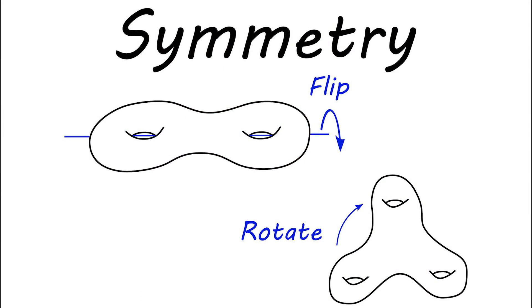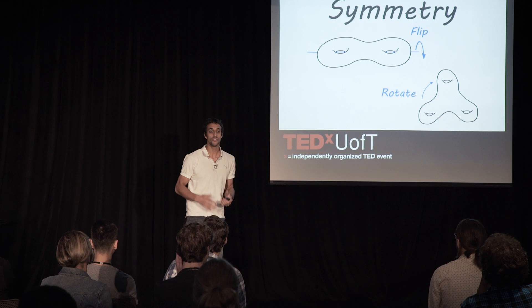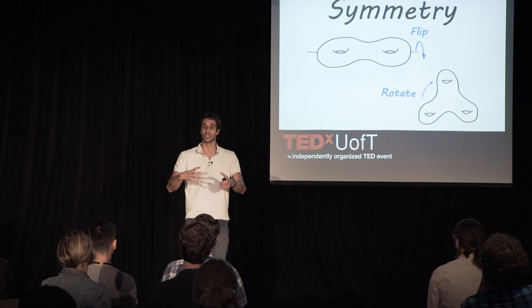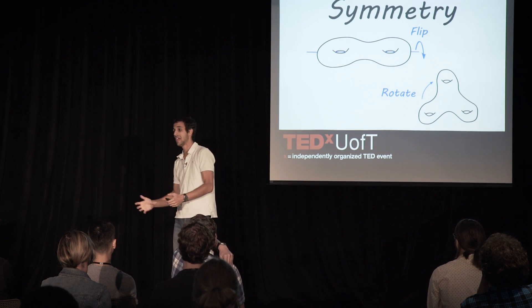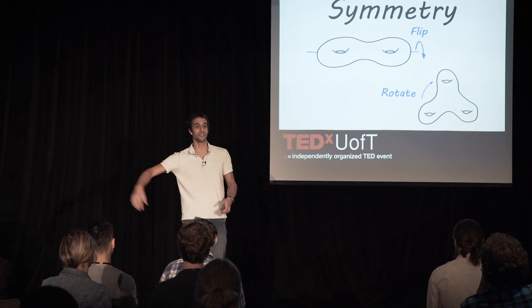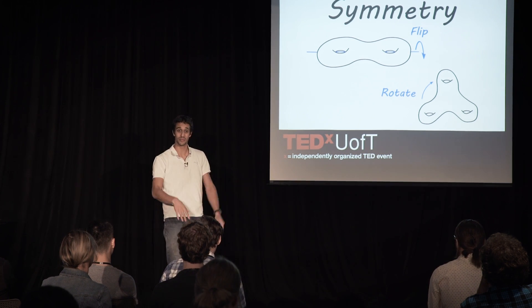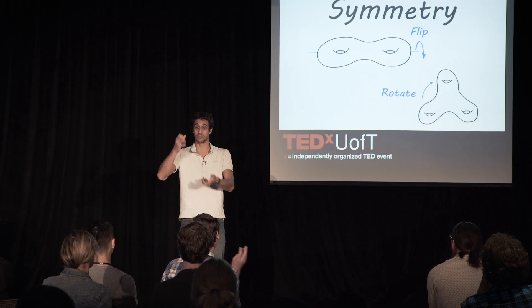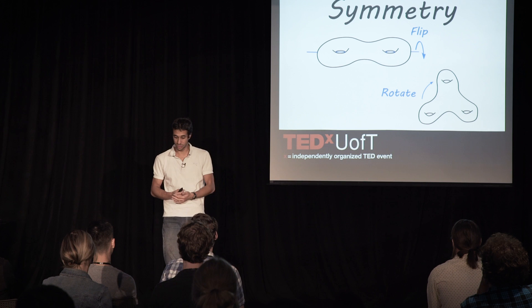Here's an example of a symmetry: if I take a two-hole doughnut, I could flip it — if you were looking away while I did that, you couldn't tell it happened. Here's an example of a symmetry of a three-hole doughnut: if I rotate by 120 degrees, again, if you were looking away, you wouldn't be able to tell. If you take a two-dimensional surface and look at the entire group of symmetries, that entire group has structure on it, in the same way that the whole numbers have addition. You can take two whole numbers and get another one out; you can take two symmetries and get another symmetry out. If you can understand this structure, it turns out you can use that understanding to understand the four-dimensional surface that you built. So that's the area I work in: the symmetries of two-dimensional surfaces.